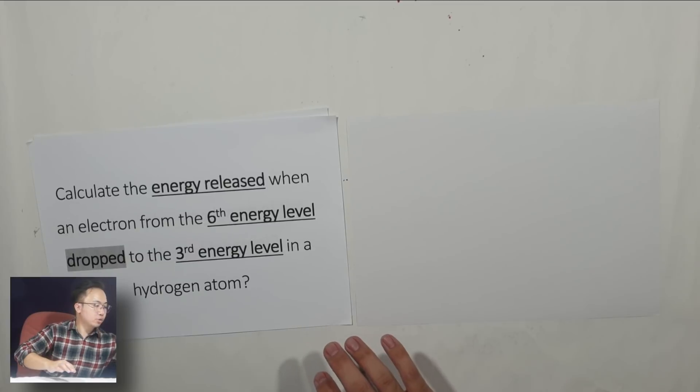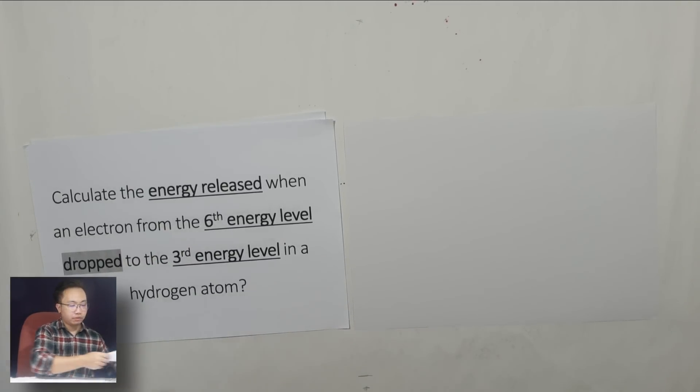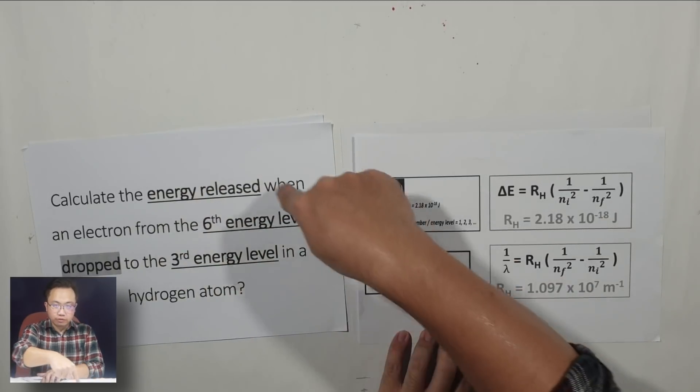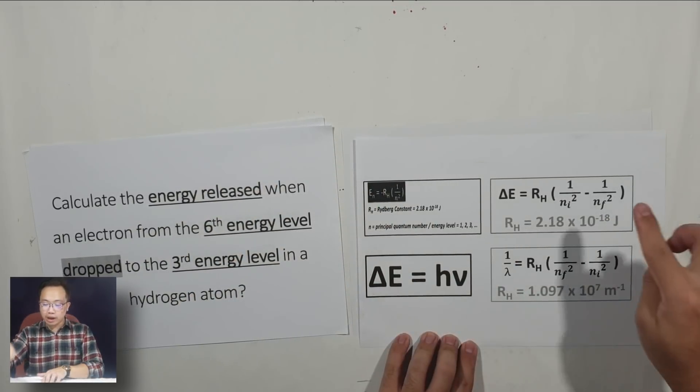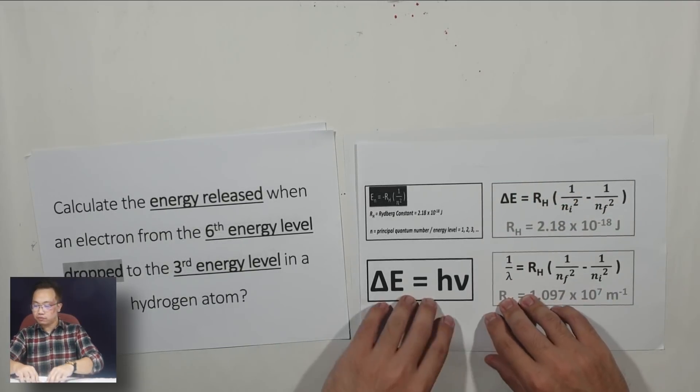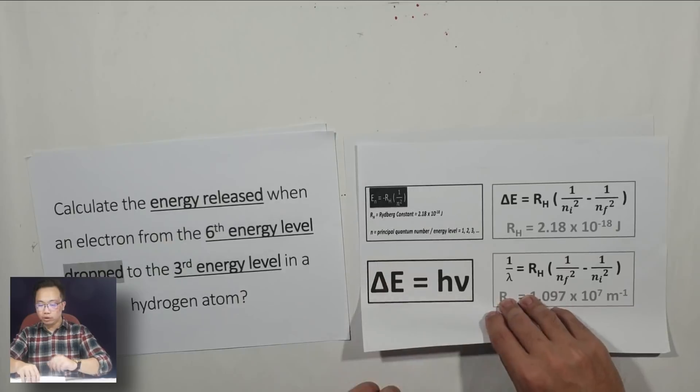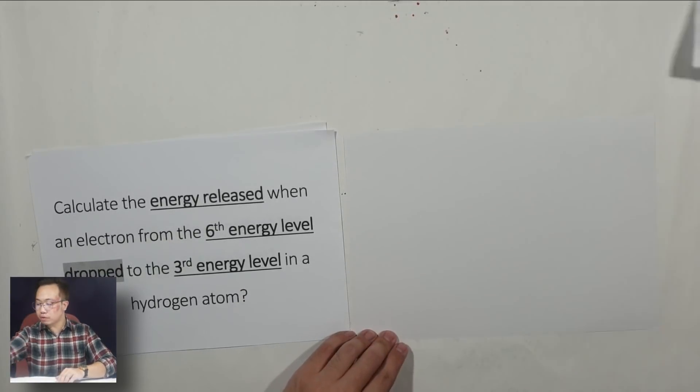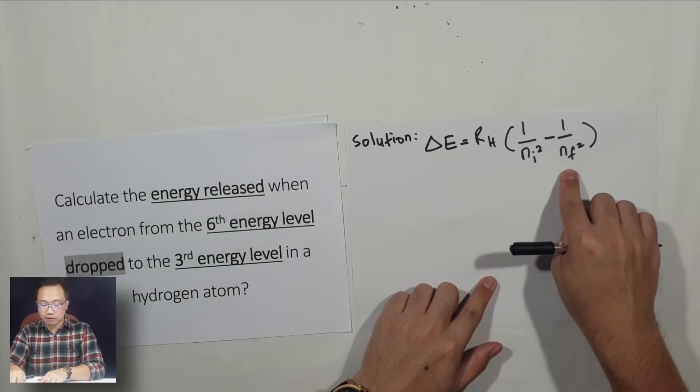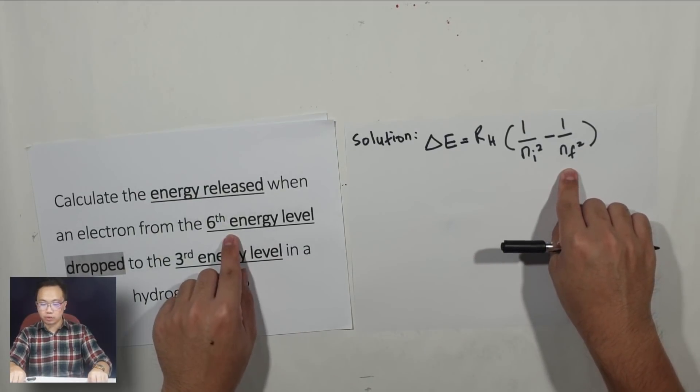Just now, I have shown you a few formulas. In order for us to solve this question, we have to use this formula, delta E, because this is the energy of the photon. It's very simple. All you need to do is rewrite the formula. Now, what is N initial, N final? You have to go back to your questions.